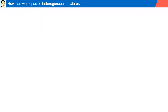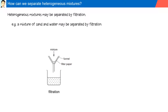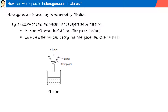How can we separate heterogeneous mixtures? Heterogeneous mixtures can be separated by filtration. For example, a mixture of sand and water may be separated by filtration. The sand will remain behind in the filter paper — it is known as a residue — while the water will pass through the filter paper and collect in a beaker, known as a filtrate.